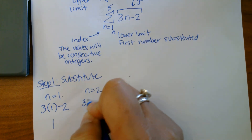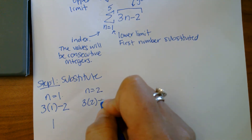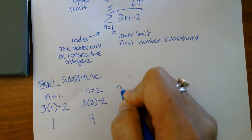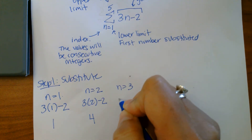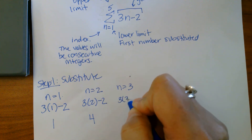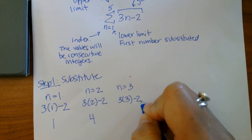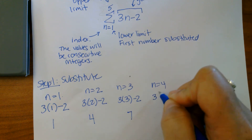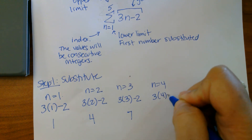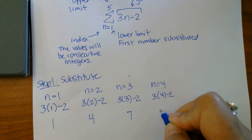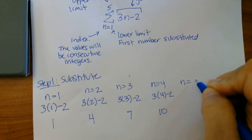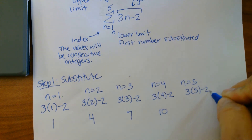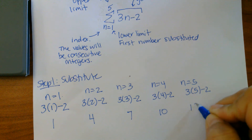Now we have to do that for n equals two — in the calculator we're going to get four. n equals three, we're going to get seven. n equals four, in the calculator we're going to get ten. And n equals five, in the calculator we're going to get thirteen.